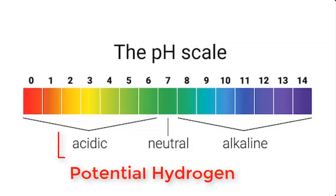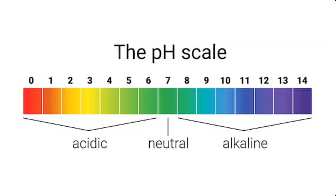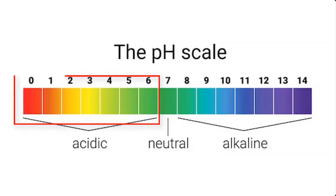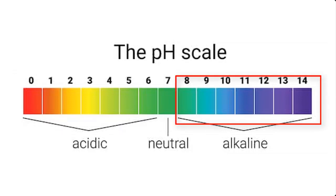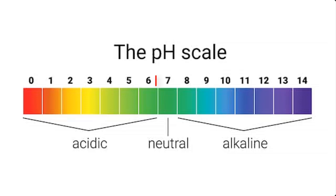A solution can either be acidic, alkaline, or neutral. An example of a neutral solution is water. pH is expressed on a number scale ranging from 0 to 14. 0 to 6 is the acidic part of the scale, and 8 to 14 is the alkaline part of the scale, while 7 stands for neutral.